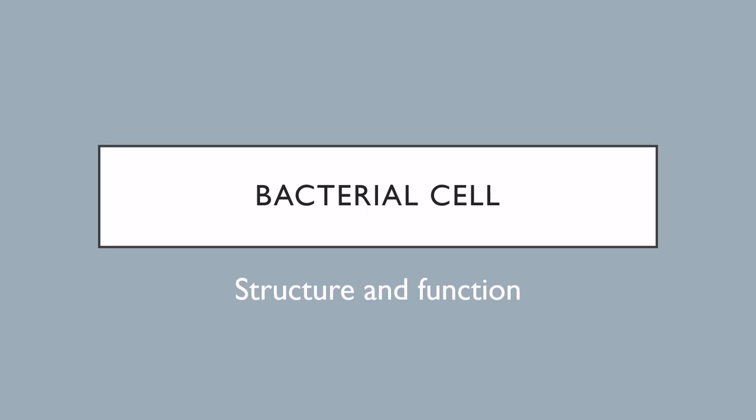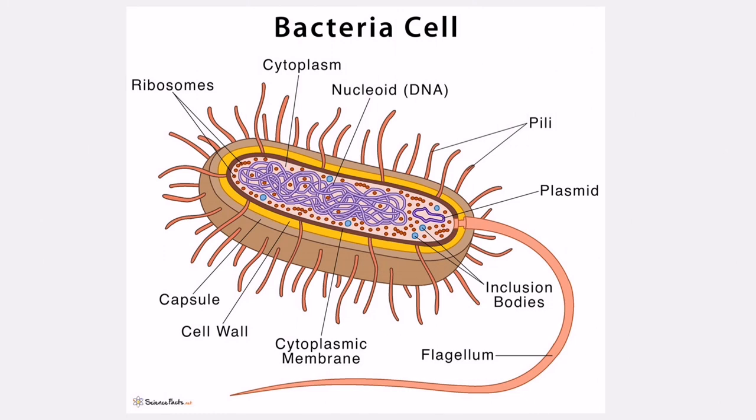Hello everyone, today's lecture is about bacterial cell structure and function. As we know, bacteria has different moiety structures or parts, and each part has their individual function. They are very important for the survival of bacteria. In this lecture we will focus on the outer coverings or outer layers, whether they are the organelles, cytoplasm, genetic material, or the outer coverings of the bacterial cell — they have a very important role in bacteria's life.